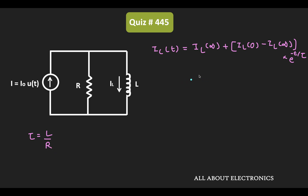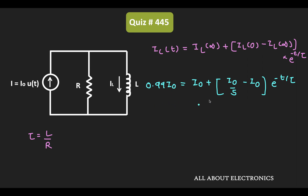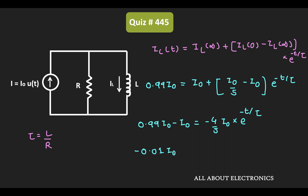Here we know that IL(∞) is equal to I0 and similarly IL(0) is equal to I0 divided by 5. Let us put all these values and find the value of T. We need to find T when the inductor current is equal to 0.99 times I0. From this equation we can say that 0.99·I0 minus I0 is equal to minus 4/5 times I0 times e^(−t/τ), or we can say that minus 0.01·I0 is equal to minus 4/5 times I0 times e^(−t/τ).